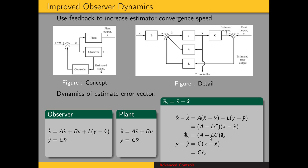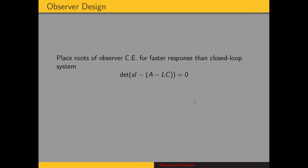We want to be able to change the transient response of the error vector. Just like when we were designing a controller, now we're designing an observer using the gain vector L. We're going to place the roots of the observer's characteristic equation in order to get a faster response than the closed loop system has. Here's the characteristic equation for the observer: sI minus the quantity A minus LC. Just like the phase variable form for controller design, there is a form that makes the mathematics easiest for observer design, and that is called the observer canonical form, which uses a left companion state matrix.